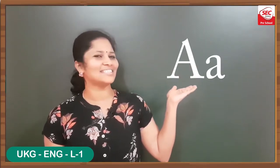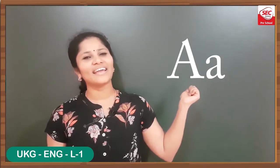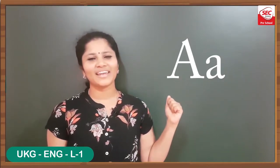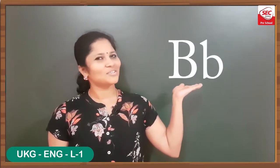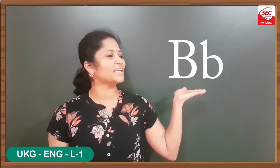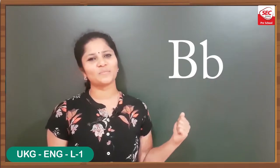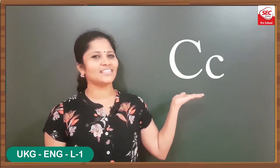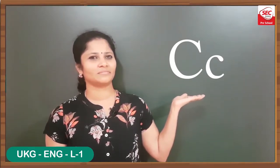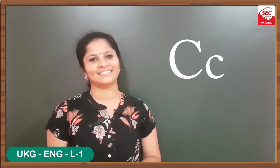This is letter A — capital A and small a. The sound of A is 'a'. Next, this is letter B — capital B and small b. The sound of B is 'b'. This is letter C — capital C and small c. The sound of C is 'k'.